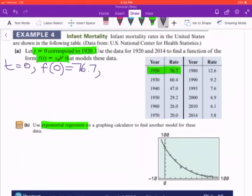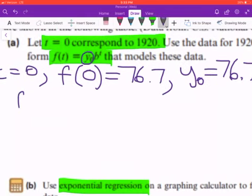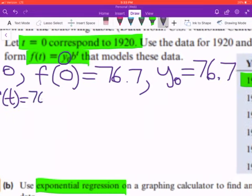This is similar as saying y sub 0, the initial percentage, because we're talking about mortality rate, is going to be 76.7. So right there, I can go ahead and replace this value that we have here, y sub 0, with that numerical value. So this will look like f of t is equal to 76.7b to the power t.